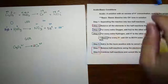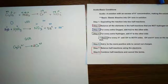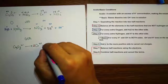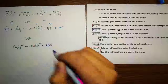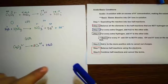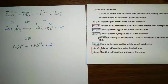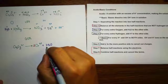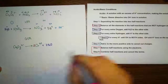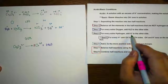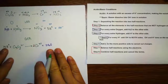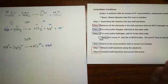Step 3 — balance oxygen. There are 7 oxygen in Cr₂O₇²⁻, so we add 7 H₂O to the product side to supply those 7 oxygens. Step 4 — balance hydrogen. 7 water molecules give us 14 hydrogen on the product side, so we add 14 H⁺ to the reactant side. Now both sides have 14 hydrogen.